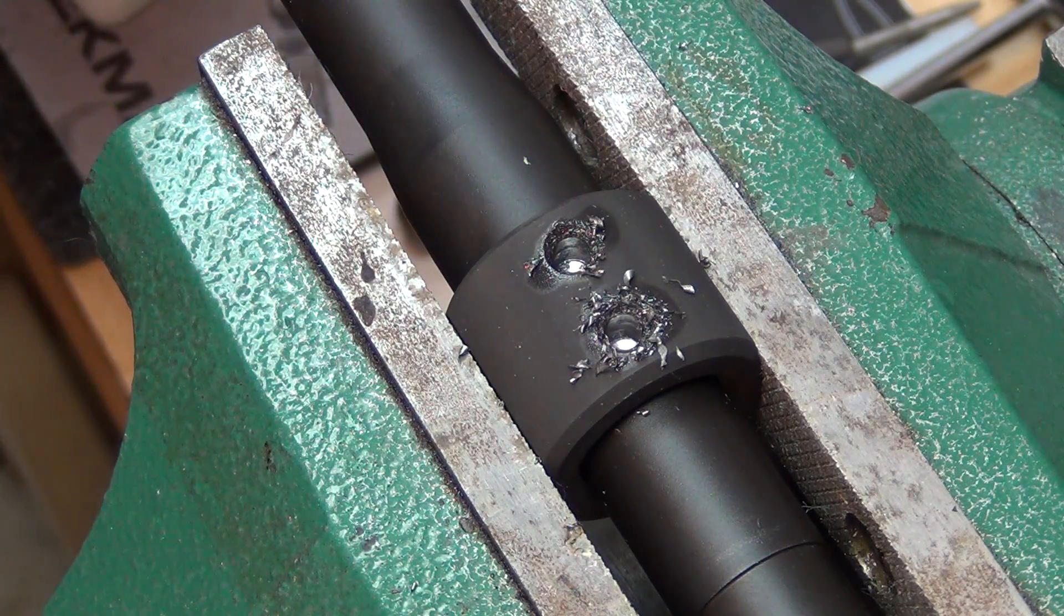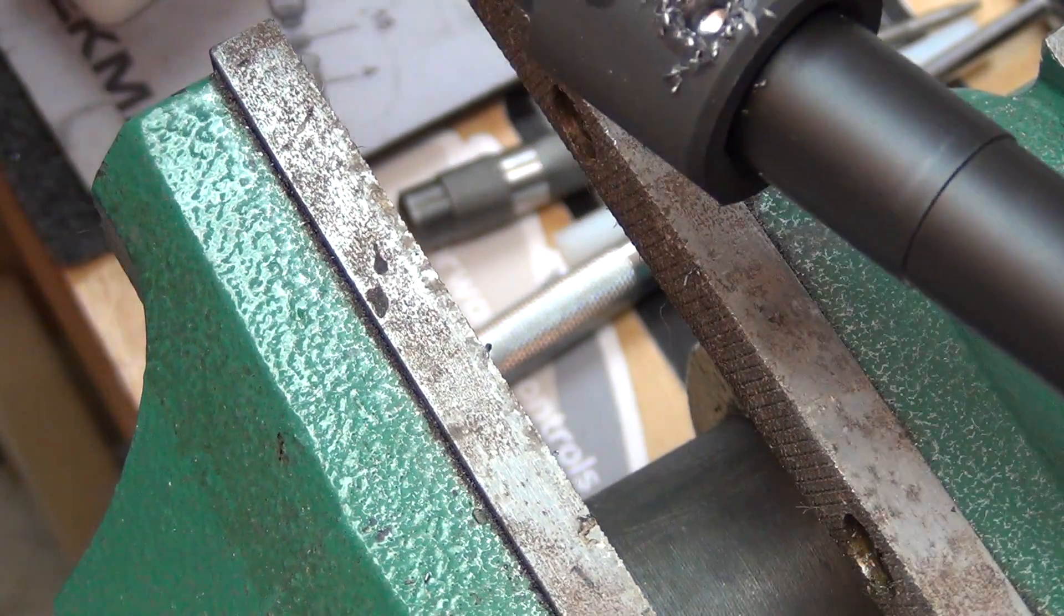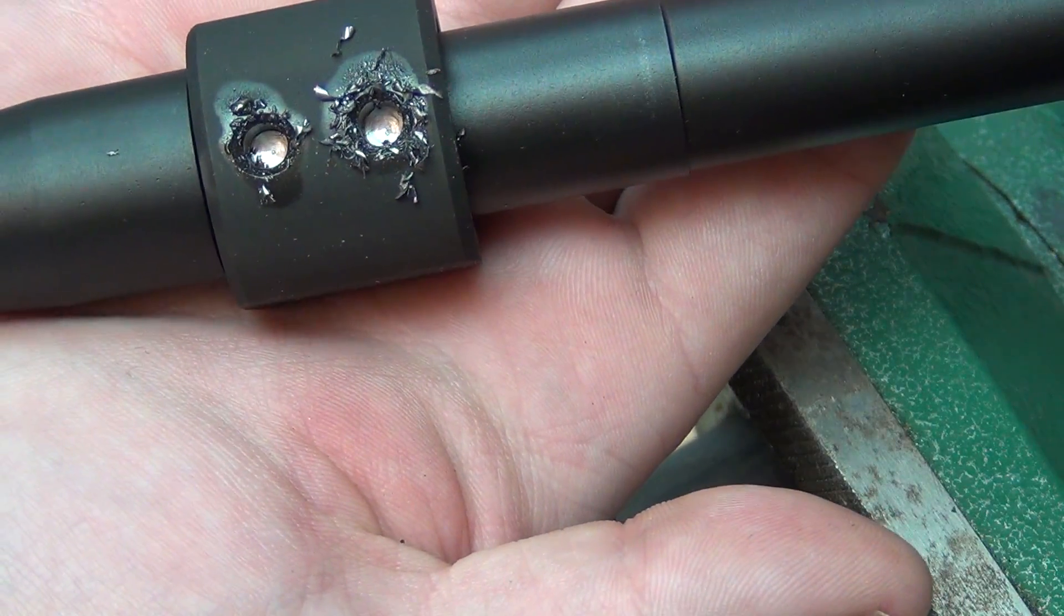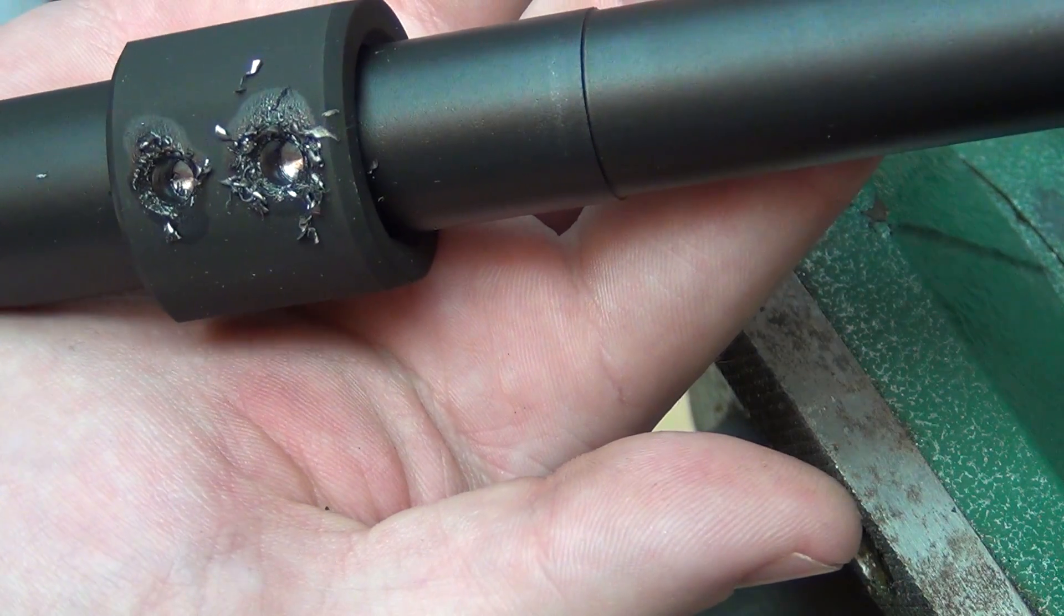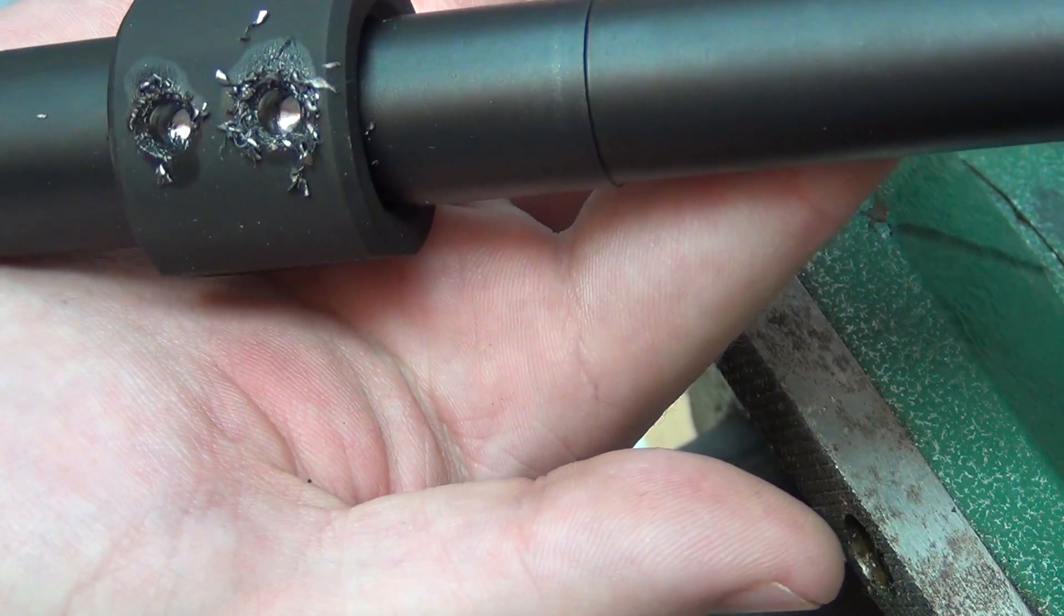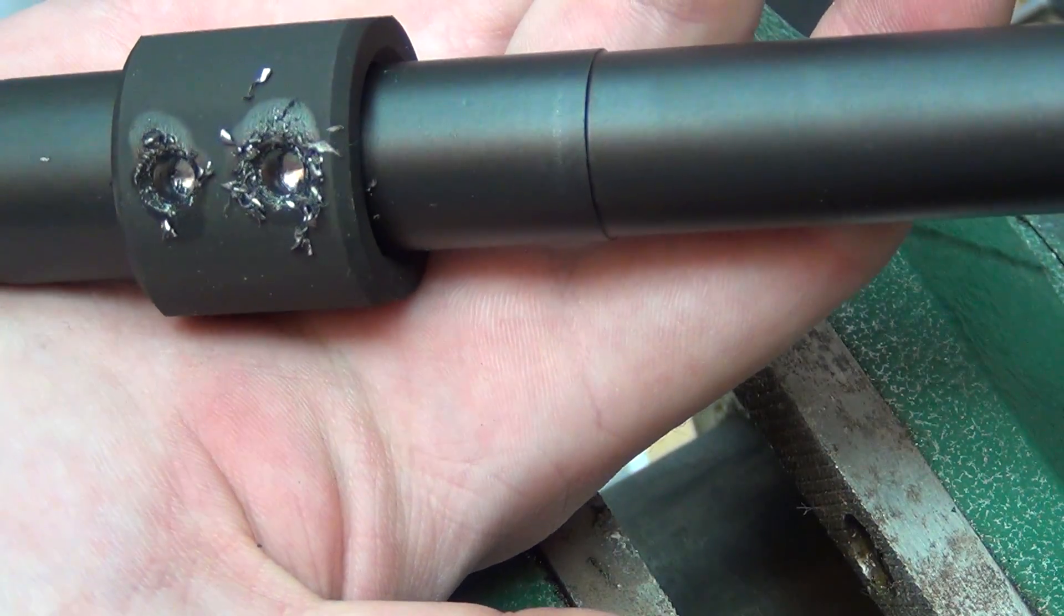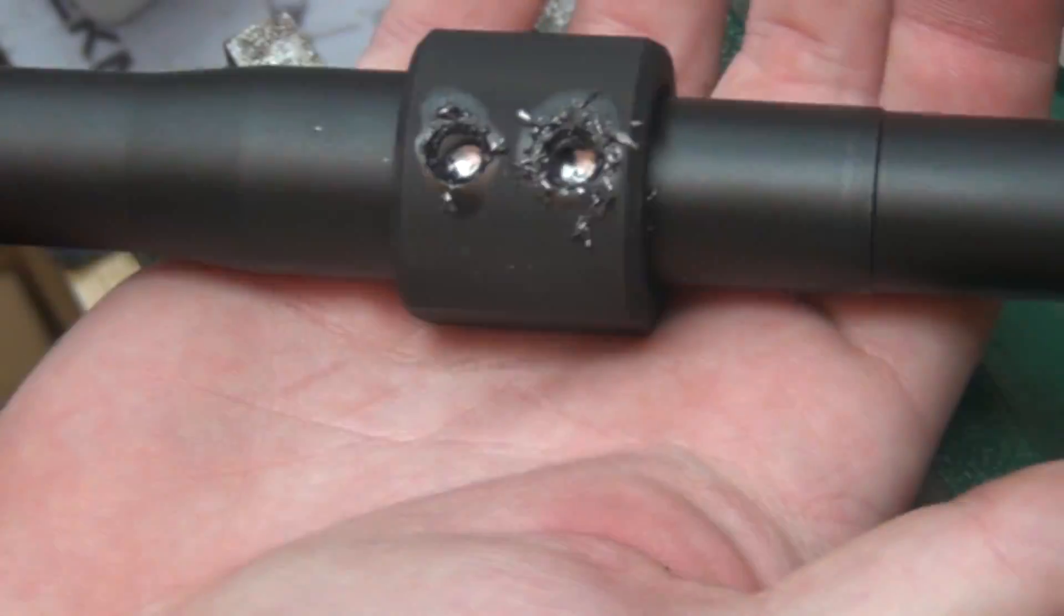I'm going to remove it from the vise. You can see the nice dimples there. I just went until they pretty much became the circumference of the jig hole and I figured that was good enough. Now I'll take this off and see what it looks like.